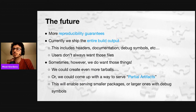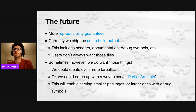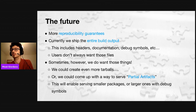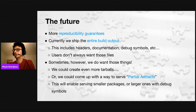In terms of the future for BinaryBuilder, I would like to have more reproducibility guarantees — at the moment we do the very basic things, which is mostly enough, but it would be better to have more guarantees. Also at the moment we basically ship the entire build output — whatever is put in the prefix by the build system. In the future, we would like to make things smaller, so maybe provide multiple tarballs: one for the runtime and another for the development files, or maybe provide partial artifacts to the user while still having a single tarball.